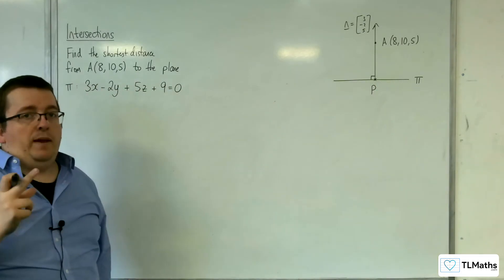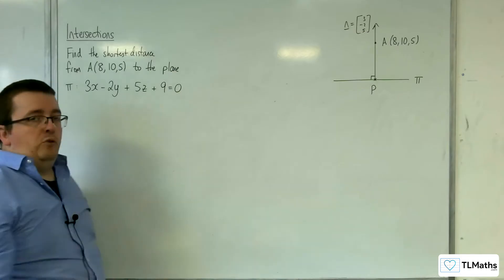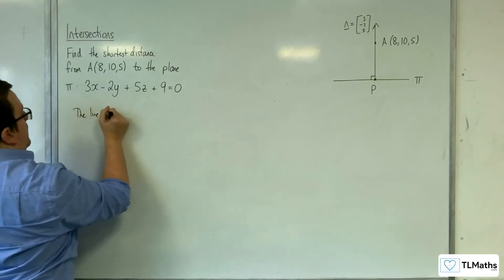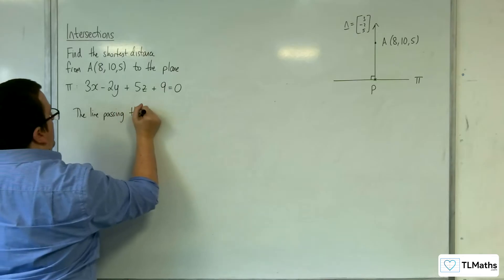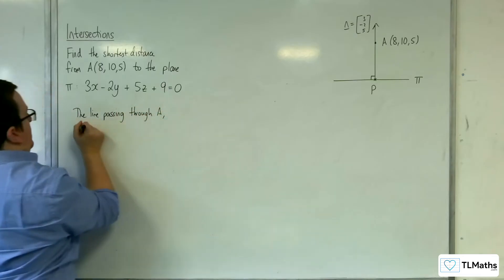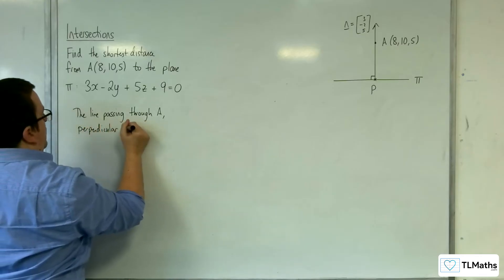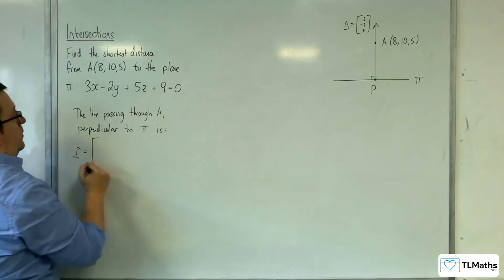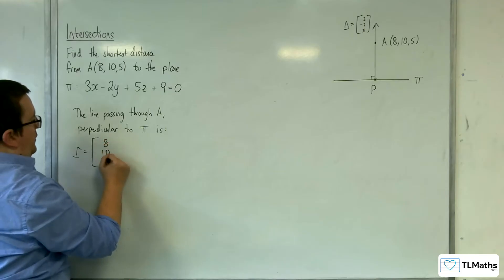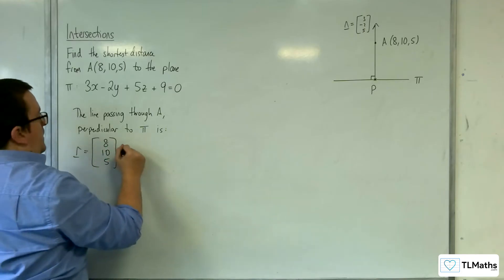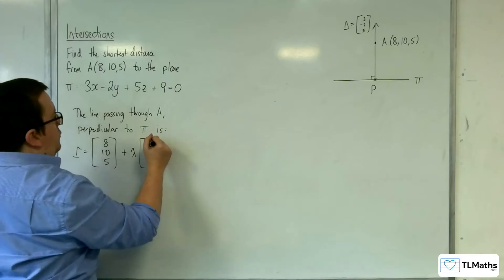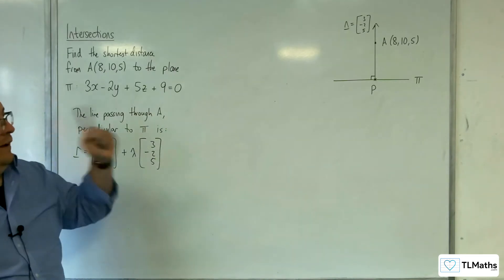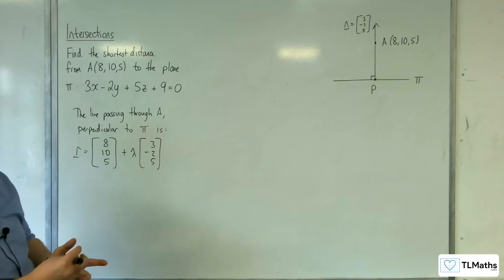such that the length AP is the distance that solves the problem. So the line passing through A perpendicular to the plane pi is R = (8, 10, 5) + λ(3, -2, 5). That is the line going through point A and perpendicular to the plane.